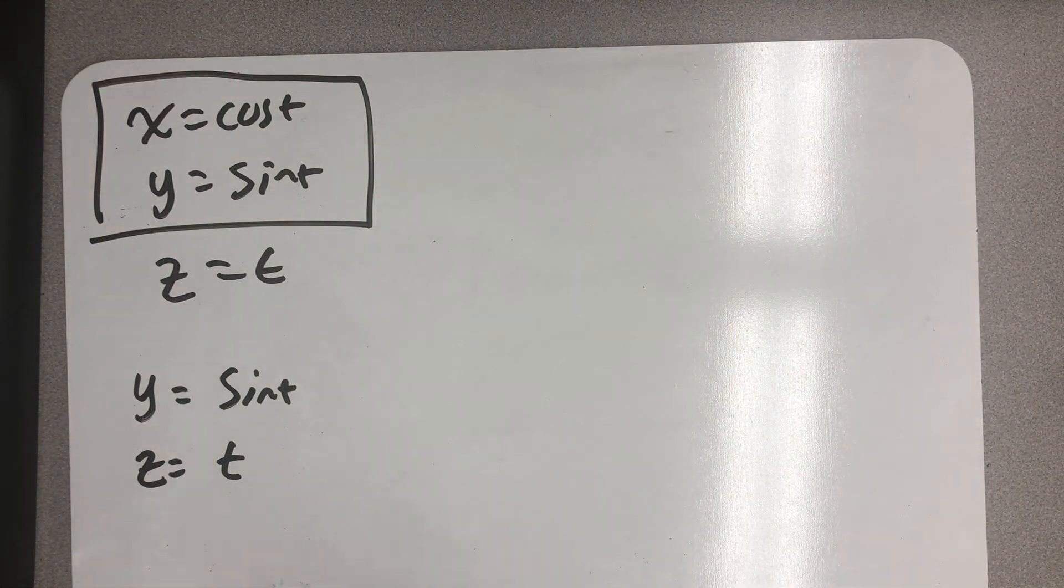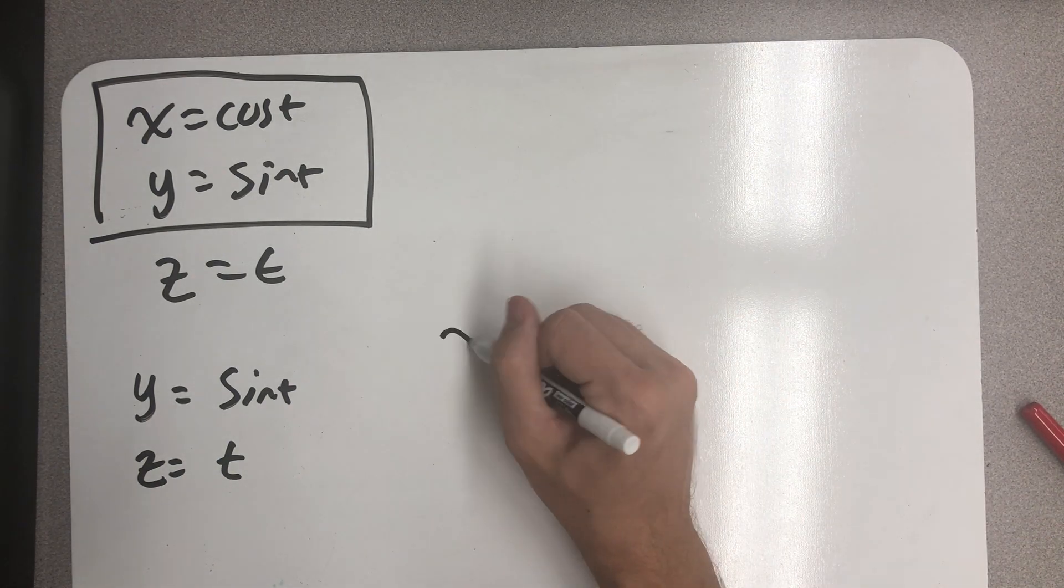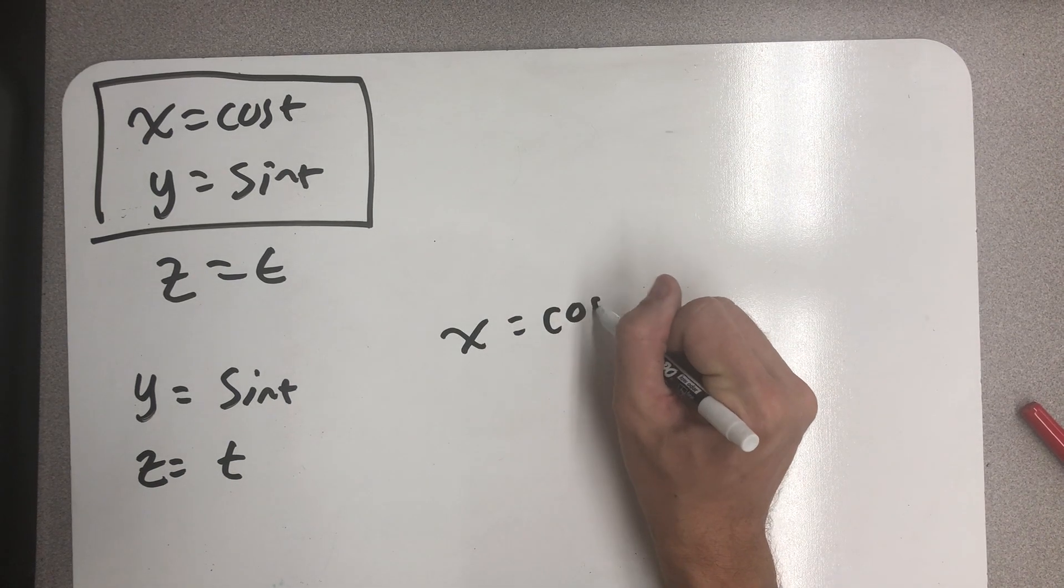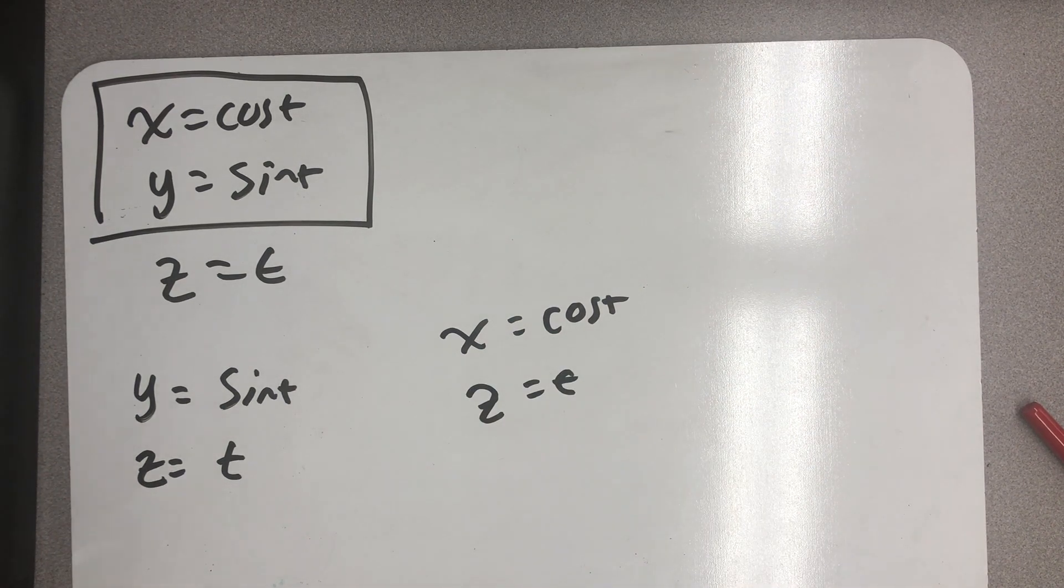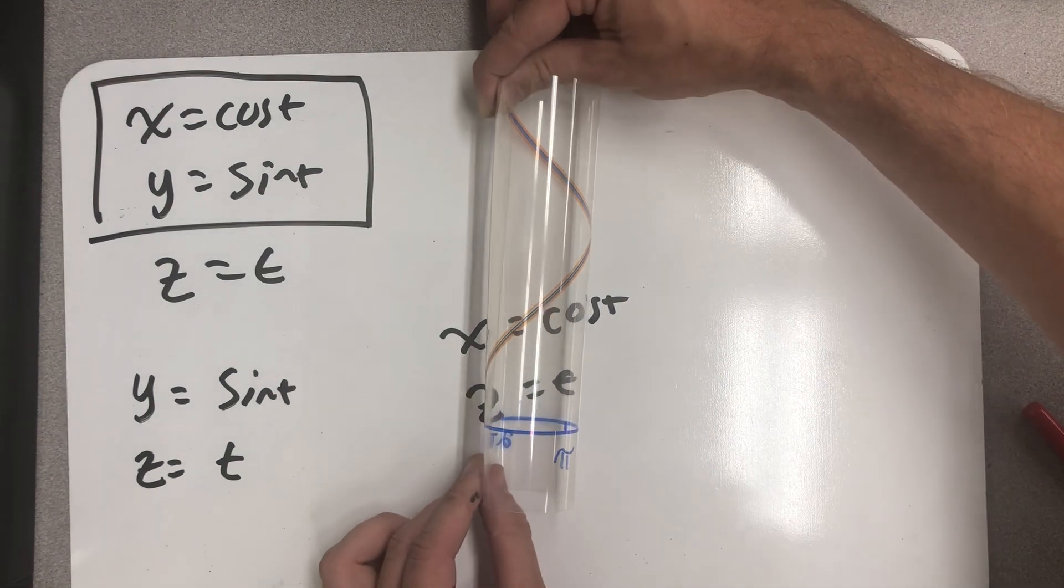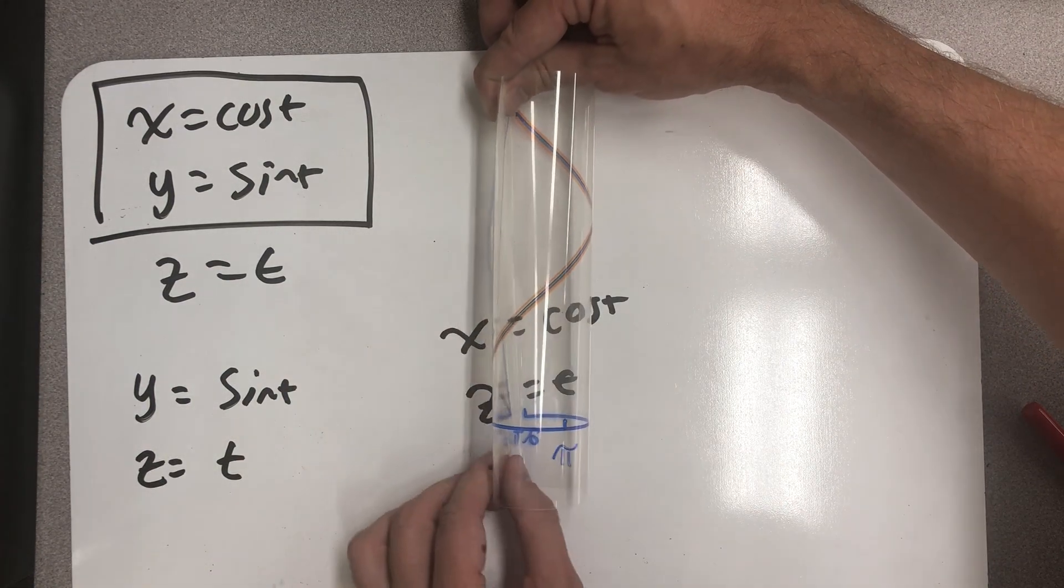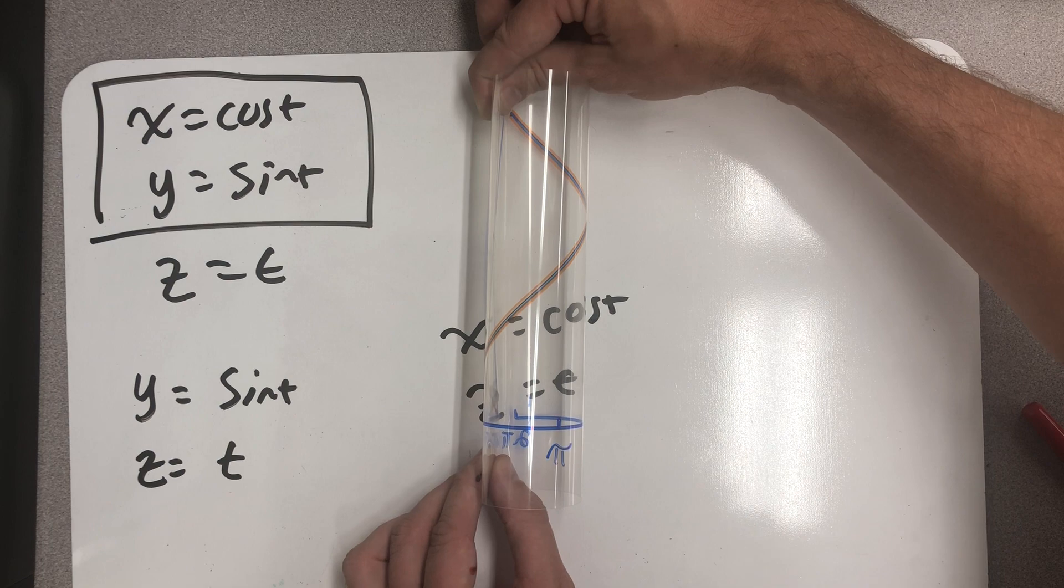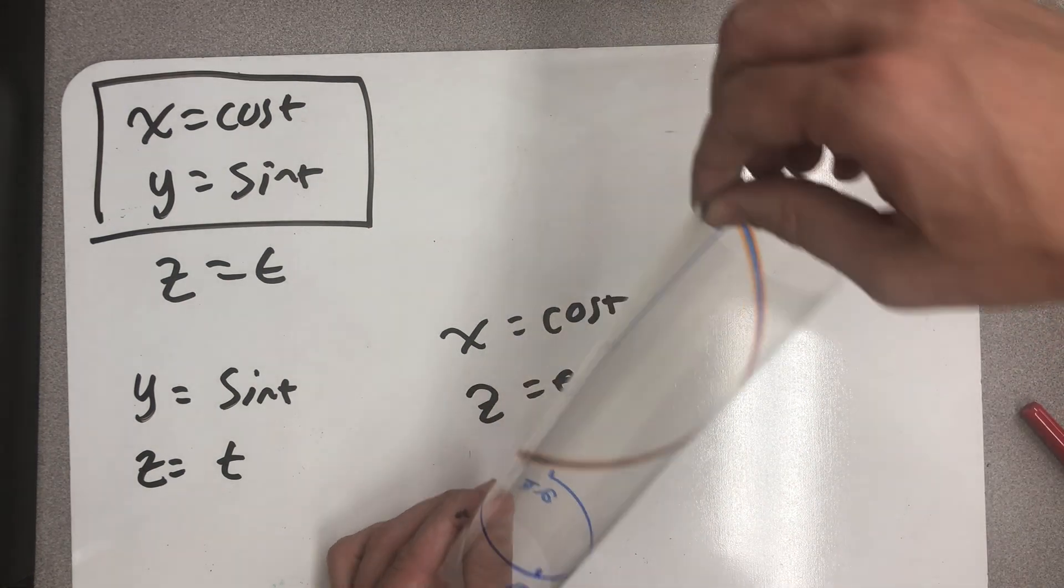If I was to imagine looking right down the y axis, and I could only observe the behavior in the x and z directions, I should see something that looks like a cosine wave going up the z axis. And that would look something like this. I literally see that cosine shape being traced out if I'm looking straight down the y axis.